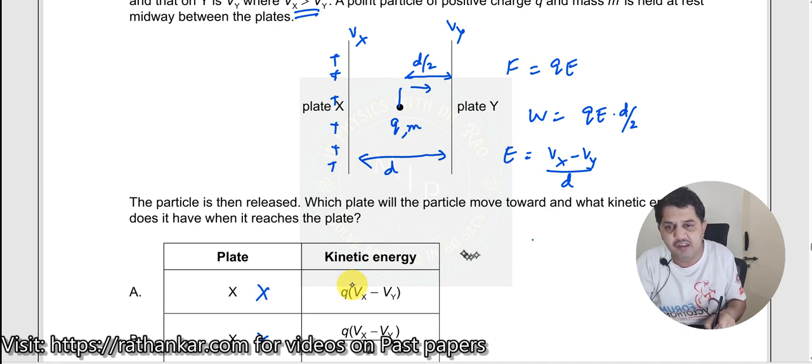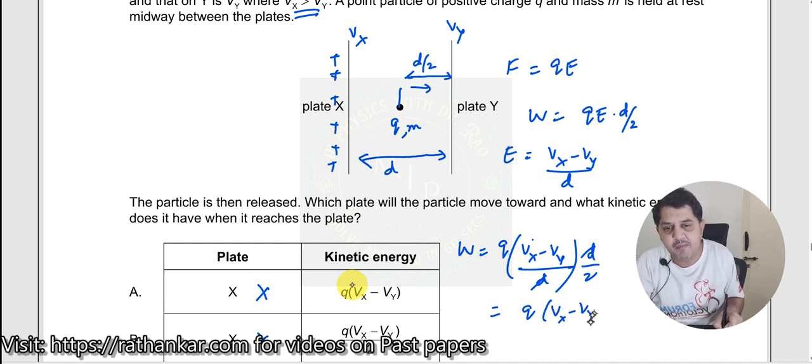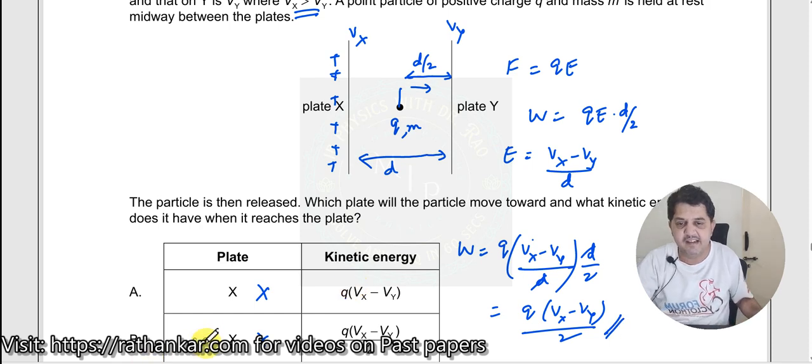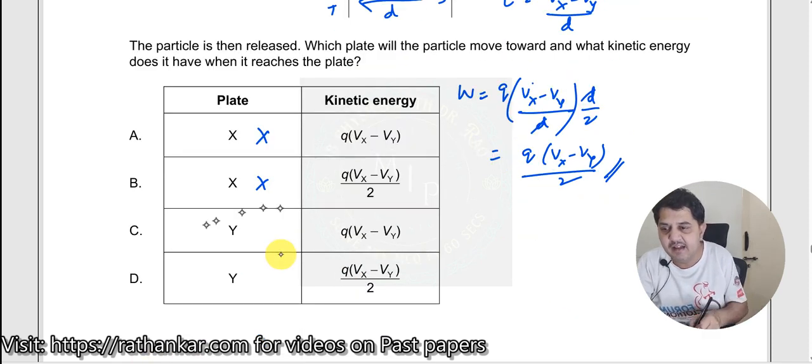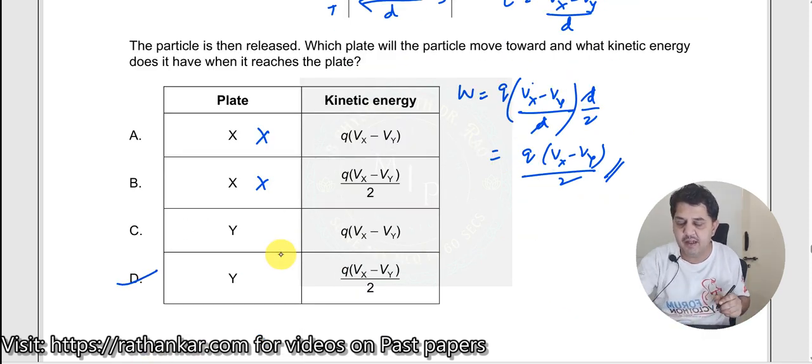When I substitute this value, I get this as Q into Vx minus Vy divided by D into D by 2. Cancelling these two, I get this as Q into Vx minus Vy divided by 2. So the answer is D over here. Thank you.